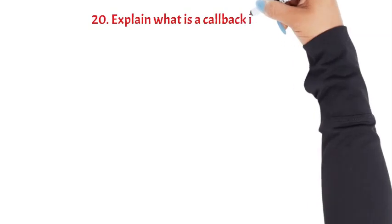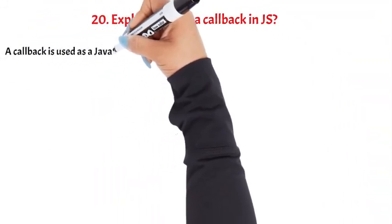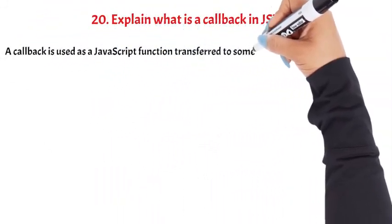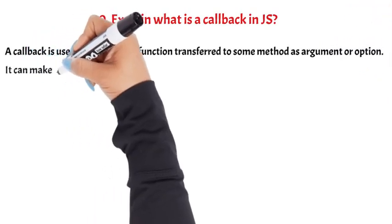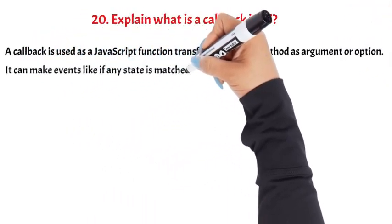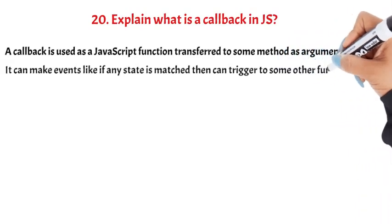Explain what is a callback in JS. A callback is a JavaScript function transferred to some method as an argument or option. It can make events like if any state is matched, then can trigger some other function. Question 21.